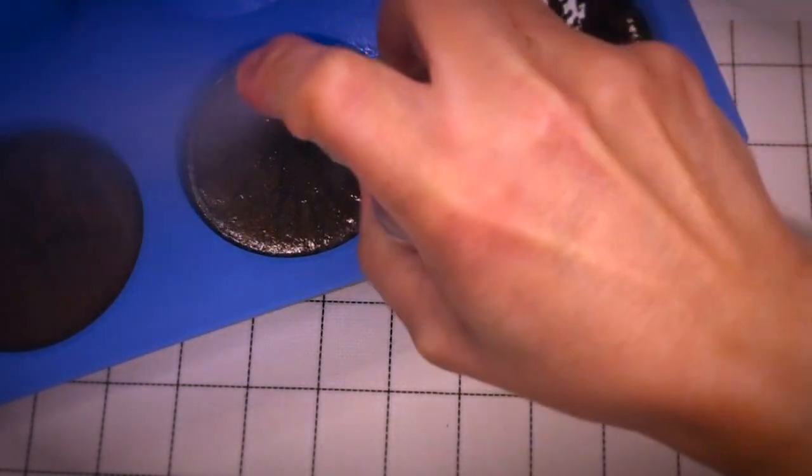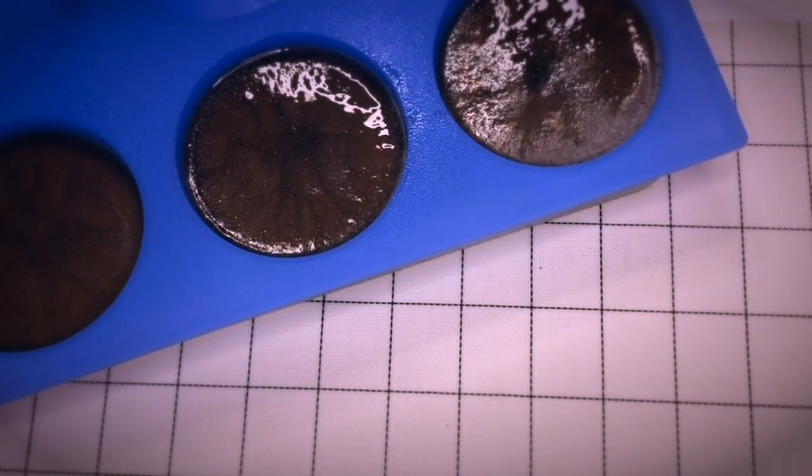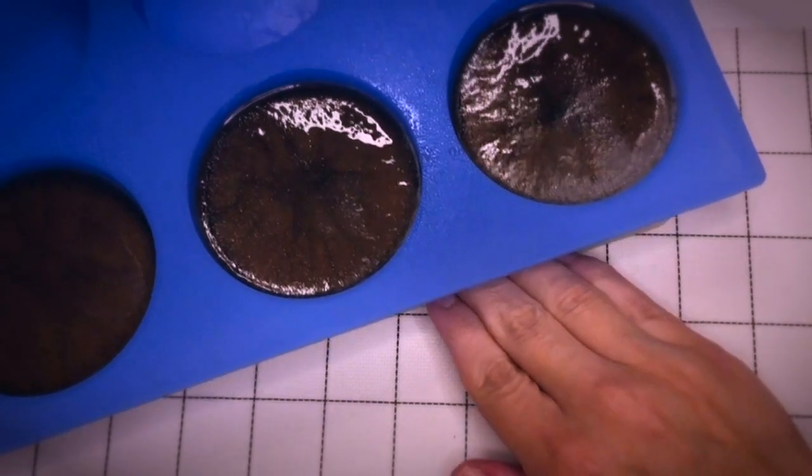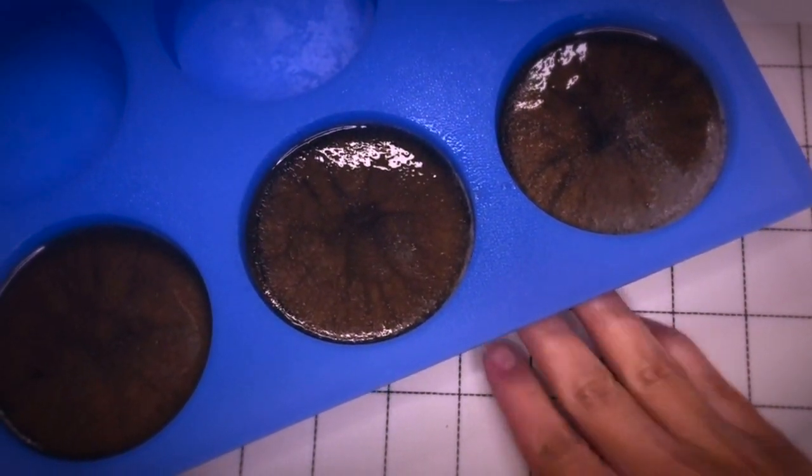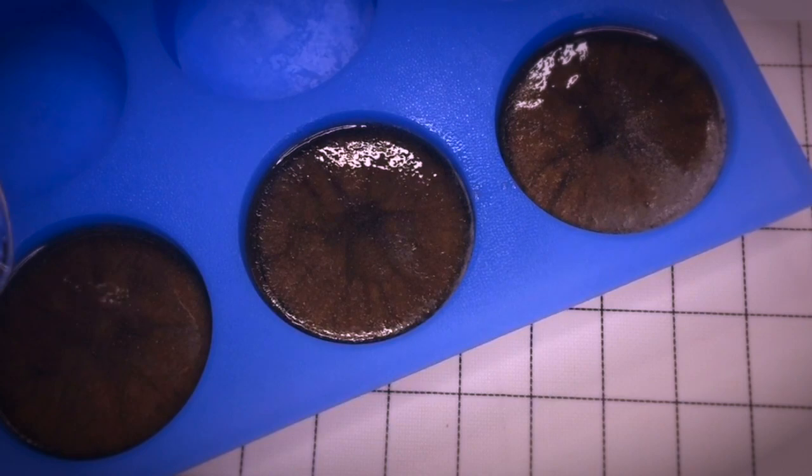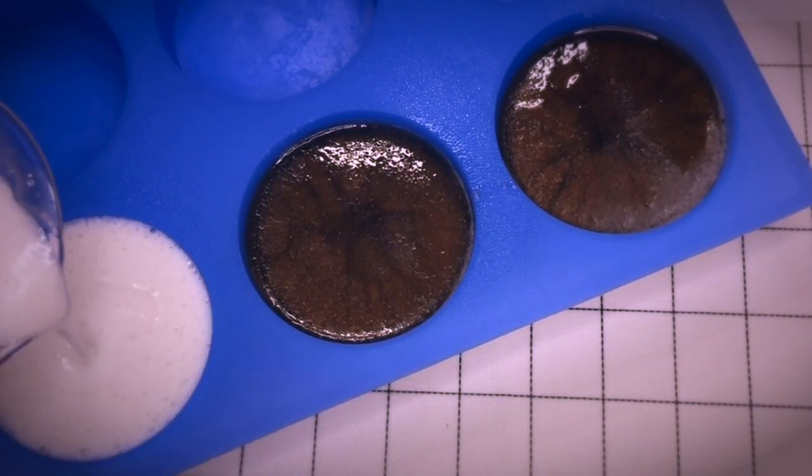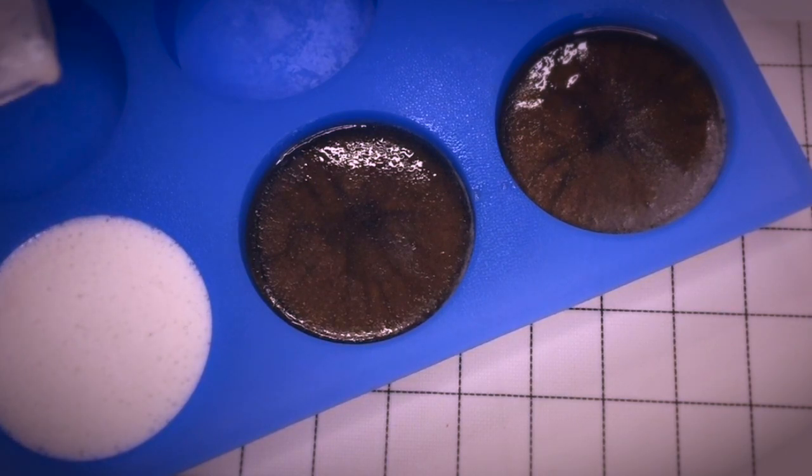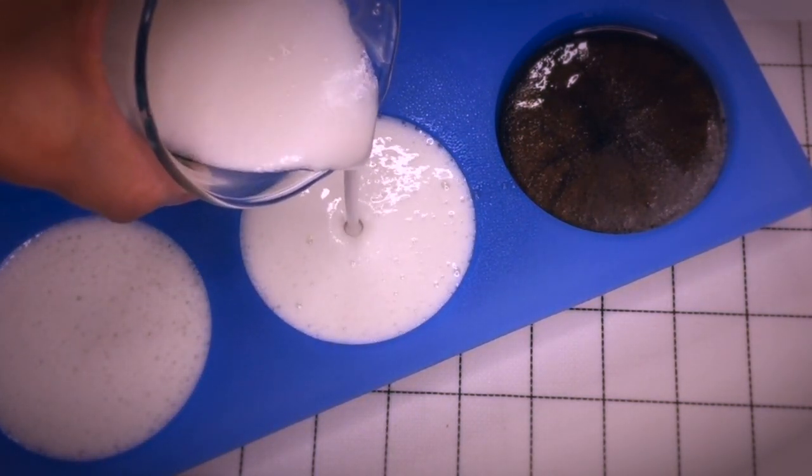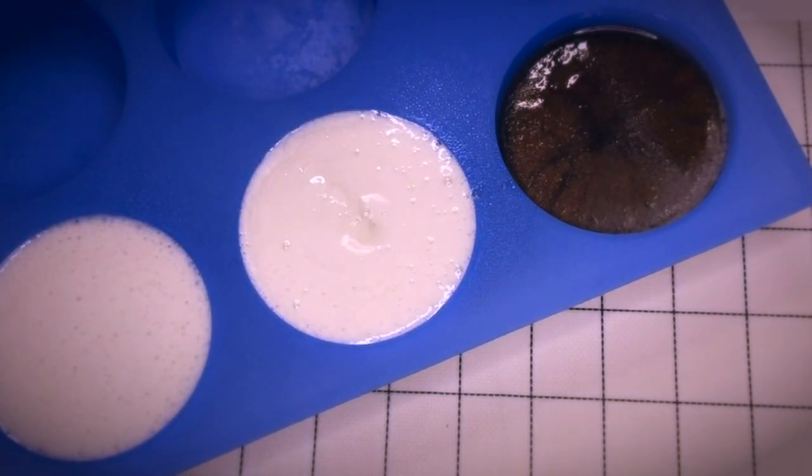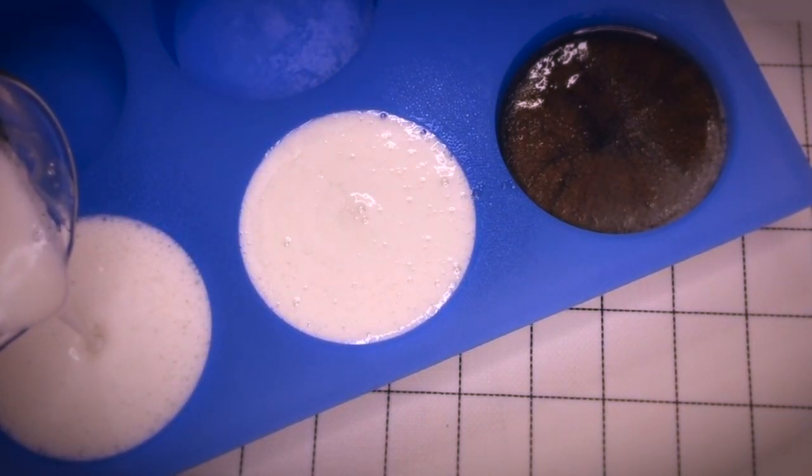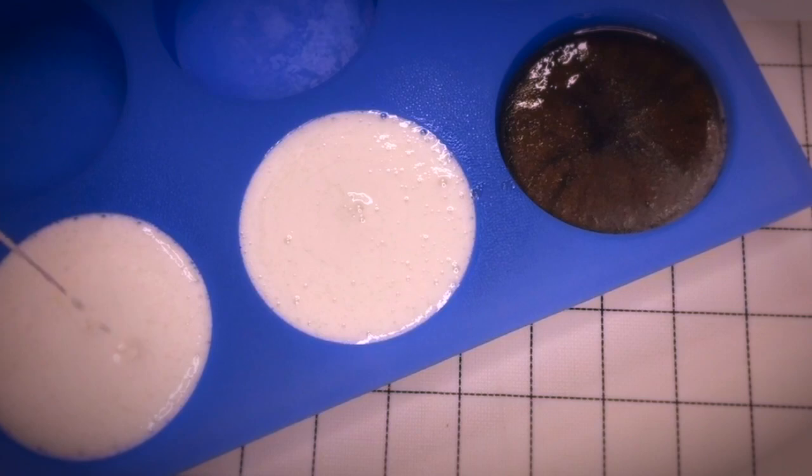Once you're happy with the consistency of your foam, spritz the first layer with rubbing alcohol and then pour the white soap on top of your brown soap. The rubbing alcohol acts like a glue and ensures that both layers really stick well together. I think this really looks like the milk layer on top.